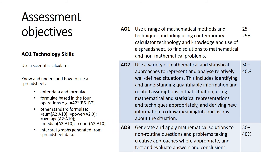Taking a close look at the assessment objectives: AO2 and AO3 type questions are more heavily weighted in the actual exam. Looking closely at AO1, you'll notice the mention of technology skills — these include use of a scientific calculator and knowing how to use spreadsheets: entering data and formulae based on the four operations, for example, or the standard formula, interpreting graphs and generating data from spreadsheets.